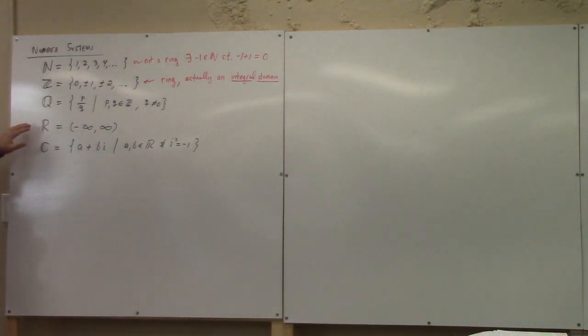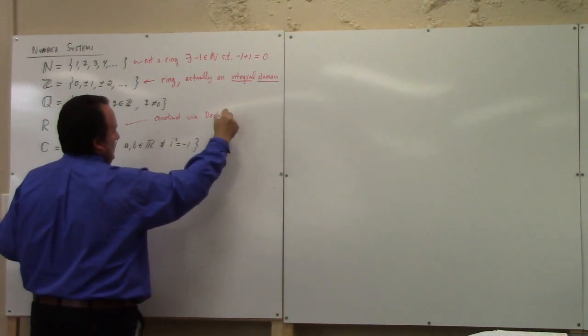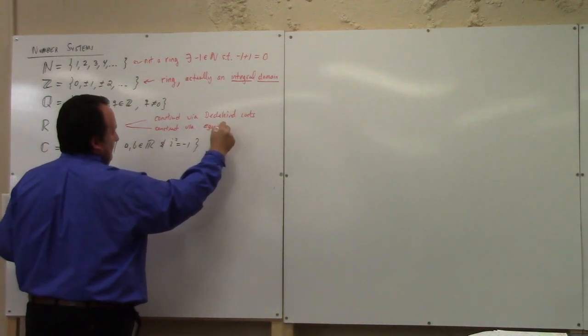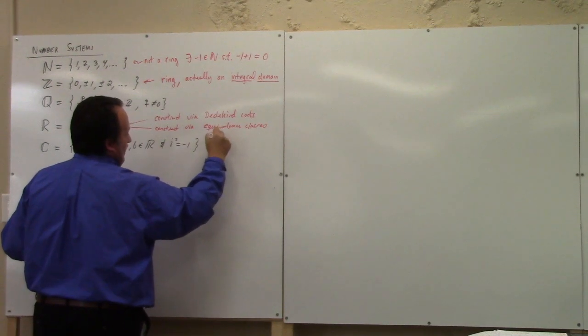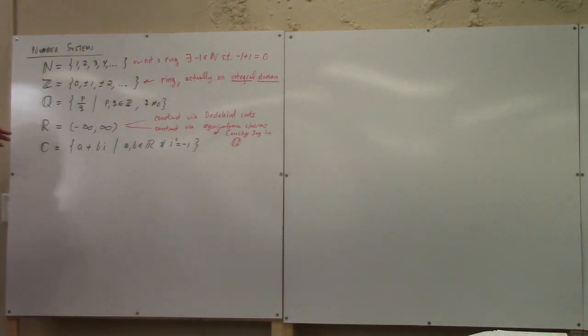In other words, one way to look at the real numbers is it is the completion of the rational numbers. Now, that concept of completion is something from analysis. It's not something we're going to do in here. It is actually quite an ordeal to construct the real numbers from the rational numbers. That's pretty technical. It's beyond this course.